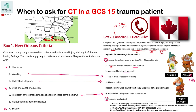That leaves four other criteria. One is a deteriorating GCS. Second, if you have a depressed or open skull fracture. Another is basal skull fracture. And the seventh is a dangerous mechanism of injury — for example, auto versus pedestrian, motor versus pedestrian, or ejection from the vehicle.